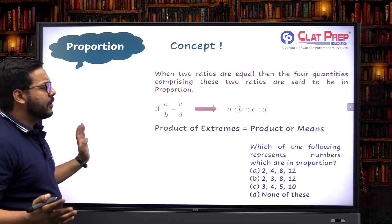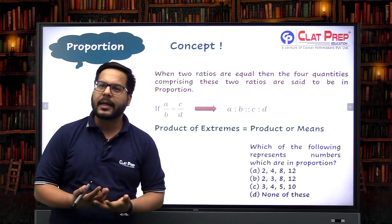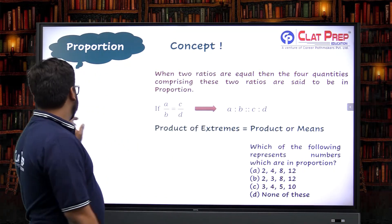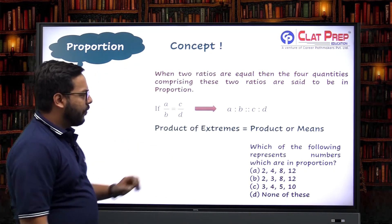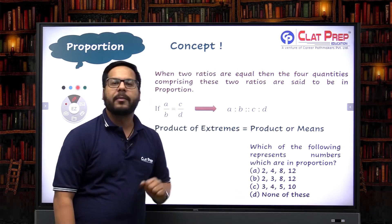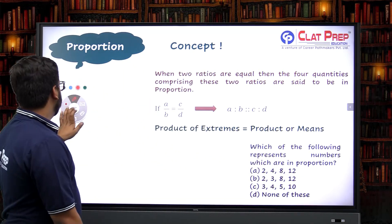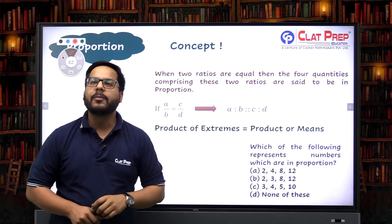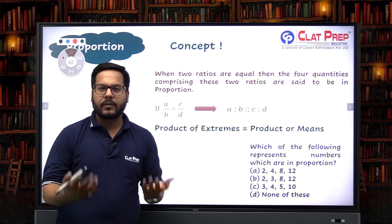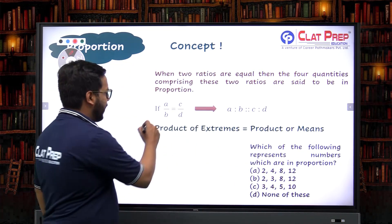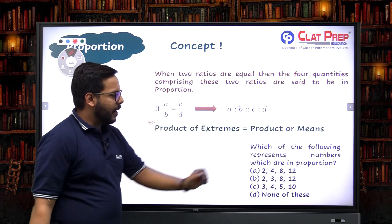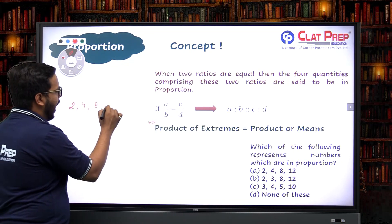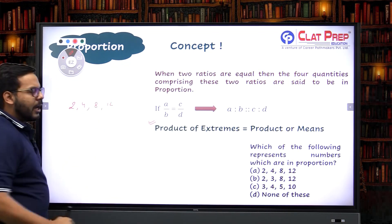Now, what are examples of proportion? Let's take a simple question. Which of the following represents numbers that are in proportion? We are given options with four numbers each, and to check this, the property of product of extremes and means will come into play. The first option gives us two, four, eight and twelve — let's check it.